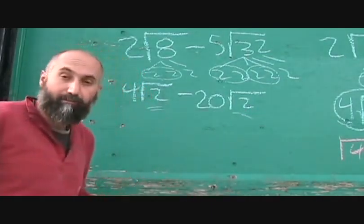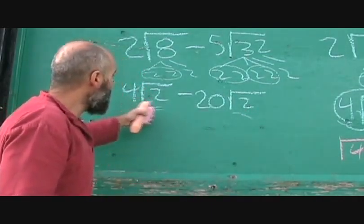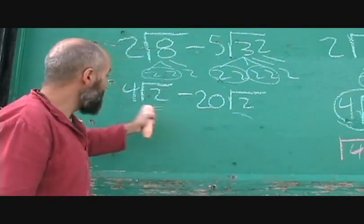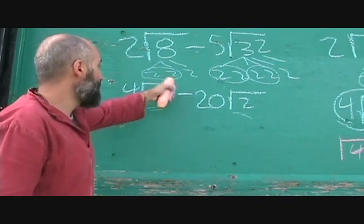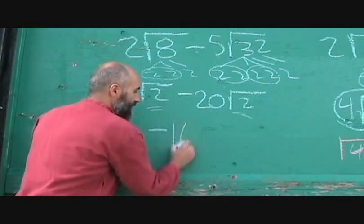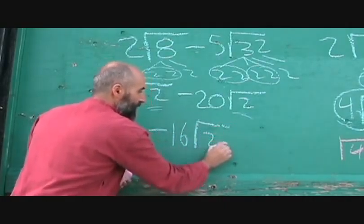Now because these things are exactly the same, you can combine your like terms. So 4√2 minus 20√2 is just 4 minus 20 of this, minus 20 of the same thing. So it's just -16√2.